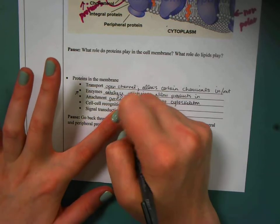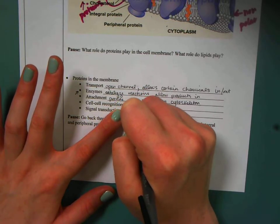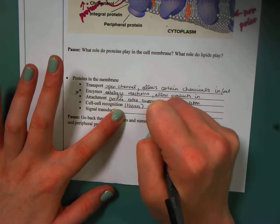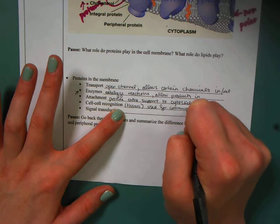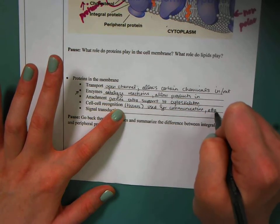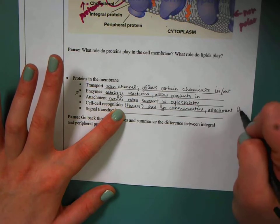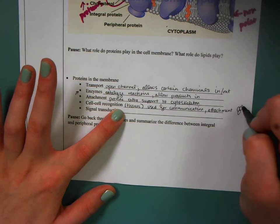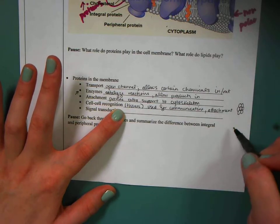Cell-to-cell recognition is really important if we're thinking about getting into tissues. These proteins are used for communication. They're also used for attachment. So that I can have two cells connect to each other, and then more and more, until I start to build a tissue or group of cells.